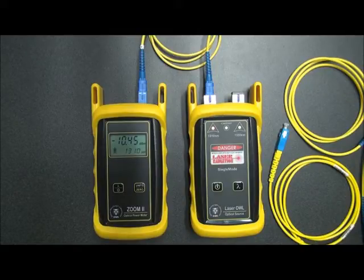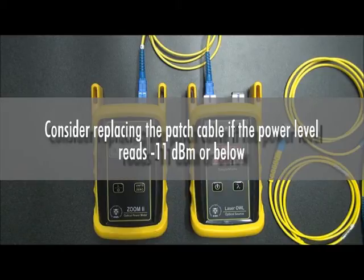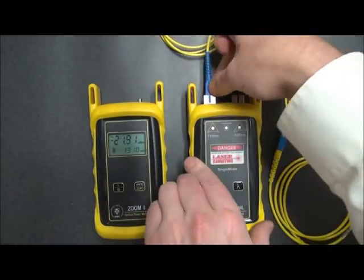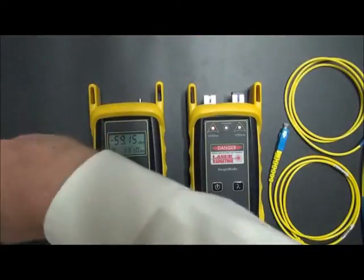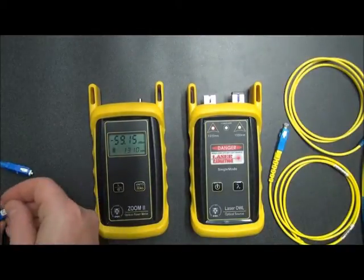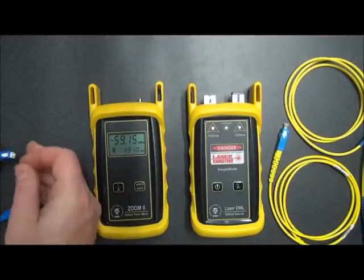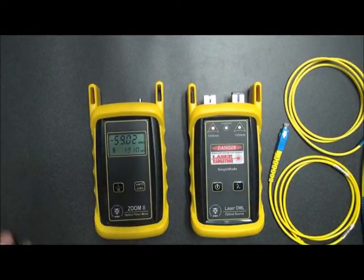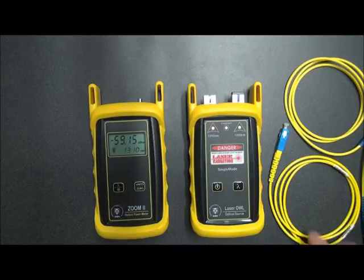What we're concerned with is that the reading does not exceed minus 11 dBm. Once it does, we want to consider replacing the patch cable. Since we've determined this cable is good, we simply disconnect it from both testers and set it aside. We will not need this cable again until we start performing our insertion loss measurement.